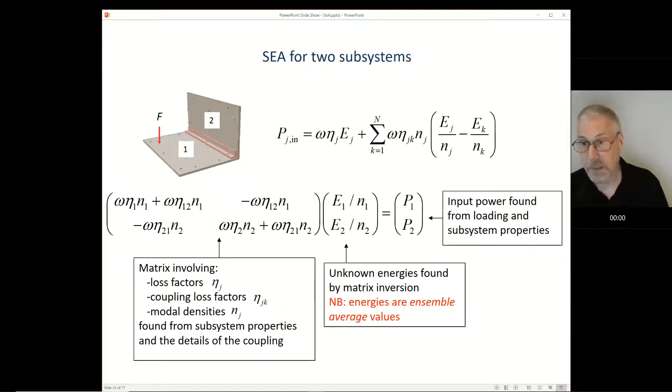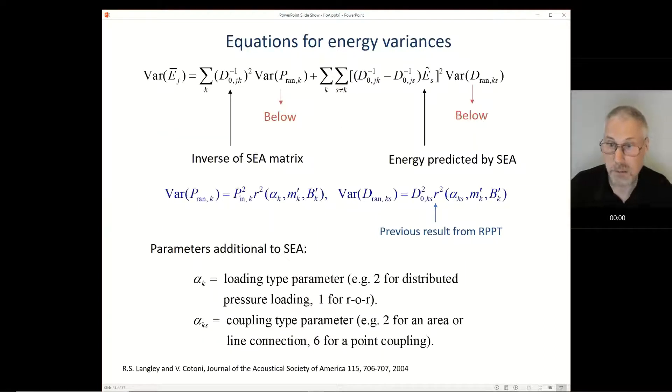It turns out that in an ensemble sense, the energy flow between components is usually proportional to the difference between the energy density, which is defined as the energy divided by the modal density. We can usually find Eta jk by using modal or wave propagation methods. So we know everything on the left hand side here. We can also find the power inputs from asymptotic methods. So we can solve these equations to get the average energy, ensemble average energy in our components. We did that for the plate, but we also got the variance. So is there a variance theory for SEA? The answer is yes.